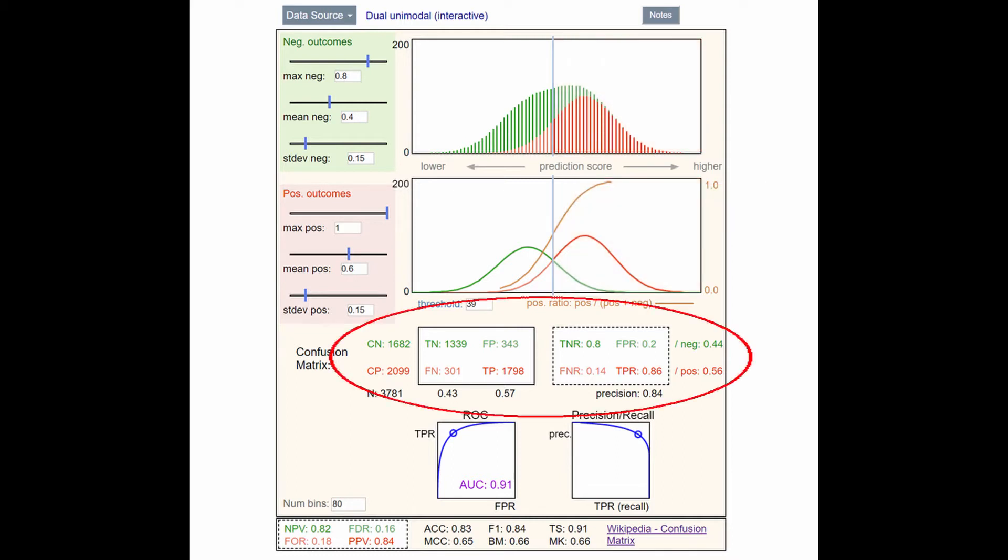The confusion matrix itself tallies how the positive and negative event predictions relate to positive and negative outcomes. First, we look at raw counts. In this example of 3,781 samples, the top row shows that 1,682 were negative outcomes. This is called condition negative, or CN. The second row shows that there were 2,099 positive outcomes. This is called condition positive, CP.